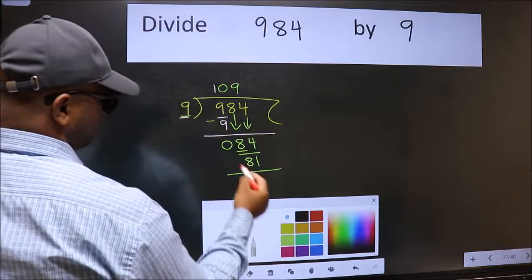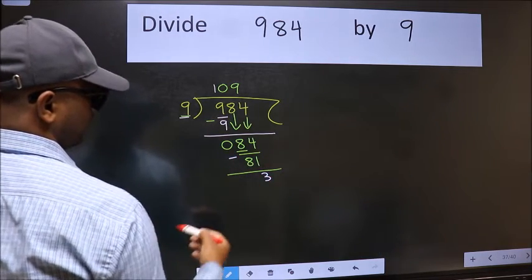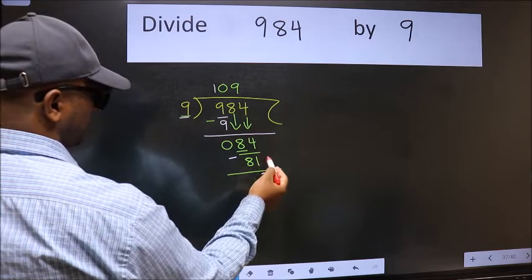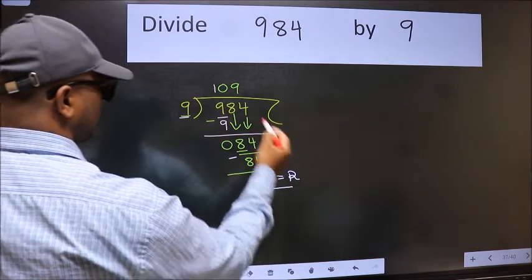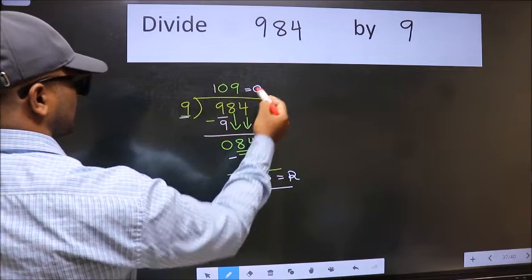Now we should subtract. We get 3. No more numbers to bring it down. So we stop here. This is our remainder, and this is our quotient.